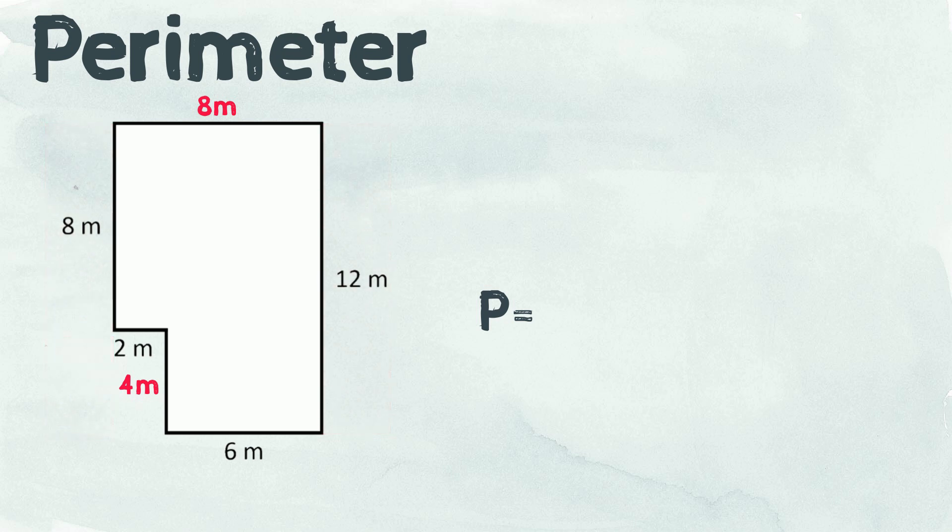Now that we've got all the measurements, we just need to add the length of the sides together to calculate the perimeter. 8 plus 2 plus 4 plus 6 plus 12 plus 8 equals 40. The perimeter is 40 meters.